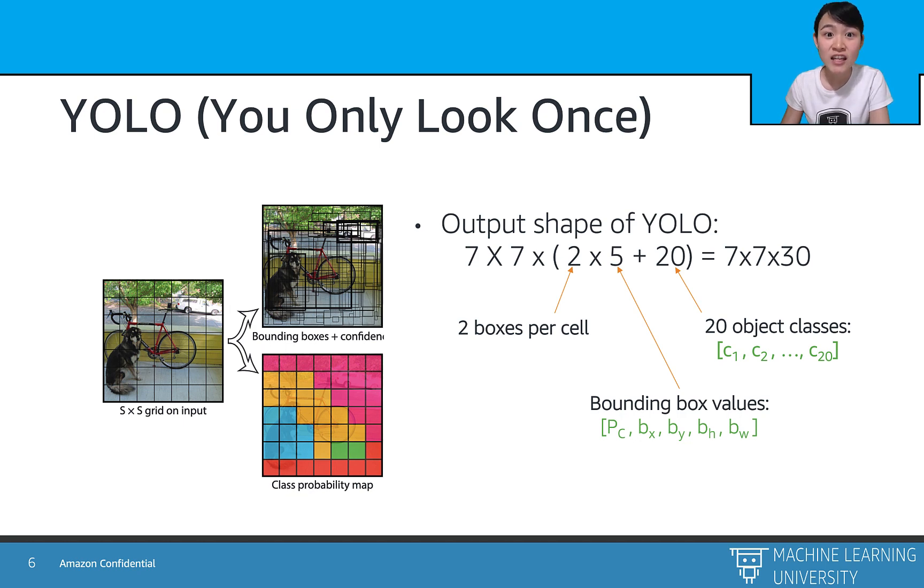It also used a 7x7 grid and two bounding boxes per grid. Again, each bounding box outputs five coordinates, and that is 2x5. And each grid needs to output its confidence probabilities for each object class, so that is 2x5 plus 20. Hence, the final output has a shape of 7x7 times width 30 for each image.